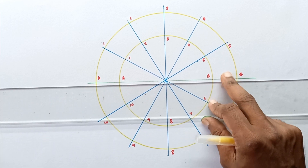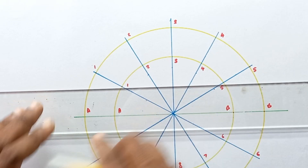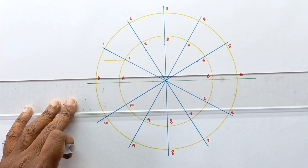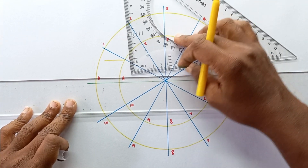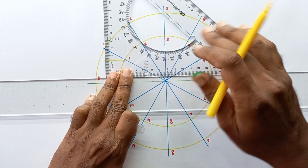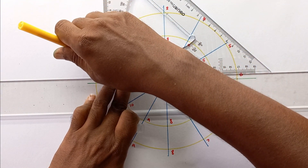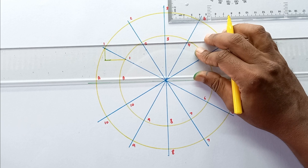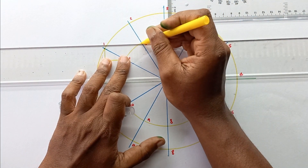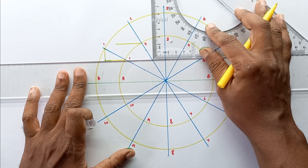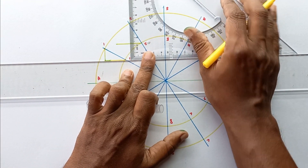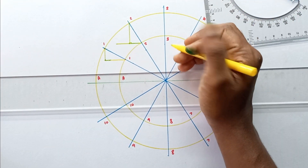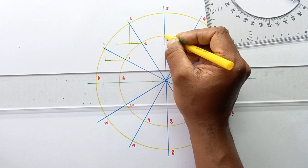Take the T-ruler up to point 1 and draw a horizontal line. Then draw a vertical line from point 1 at the larger diameter circle and take the intersection point. Repeat the process for point 2: draw a horizontal line, then draw the vertical line and take the intersection point. You can see that the vertical line and horizontal line coincide at this point.